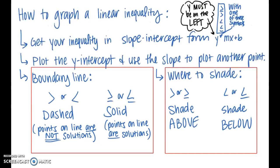Now that we know what a linear inequality is, let's talk about the process of how to graph one. This process was introduced in Algebra 1, so we're reviewing it now. First, make sure your inequality is in slope-intercept form — the form y equals mx plus b, but with an inequality symbol instead of an equal sign. Make sure y is on the left side. Then plot the y-intercept, the b value, and use the slope to plot another point.